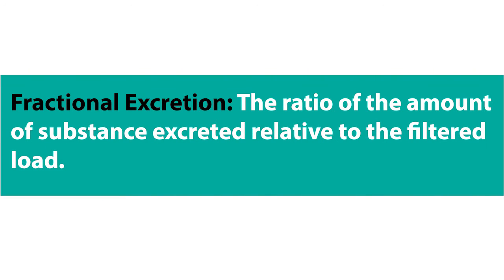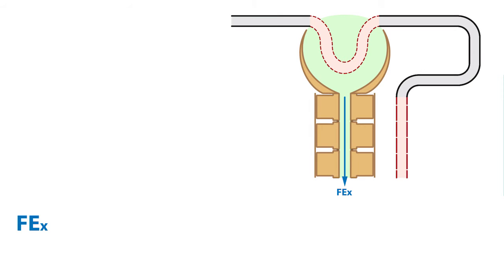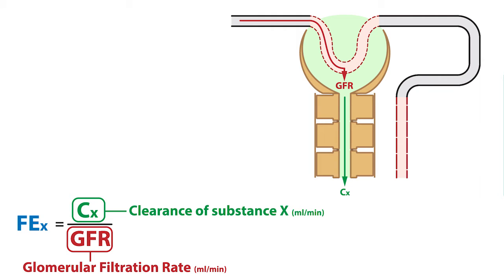Now fractional excretion is defined as the ratio of the amount of substance excreted relative to the filtered load. In other words, the fractional excretion of a substance equals the clearance of that substance divided by the glomerular filtration rate. And fractional excretion is typically expressed as a percentage when multiplied by 100.